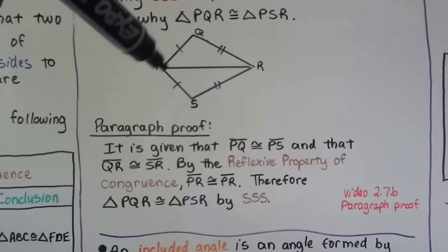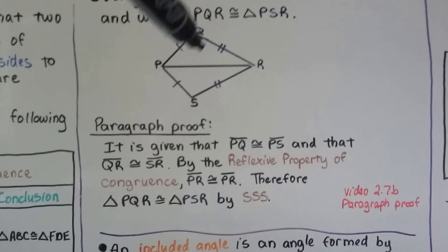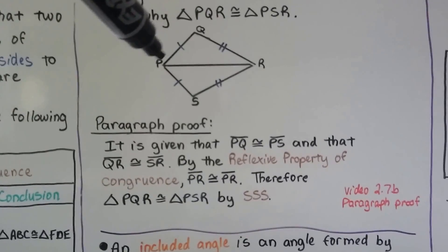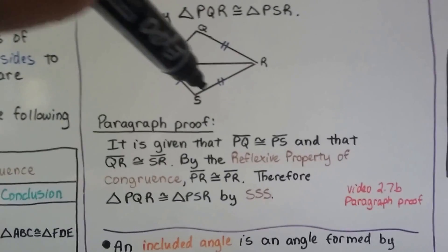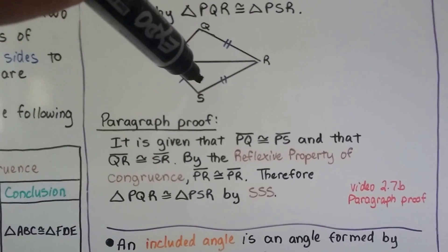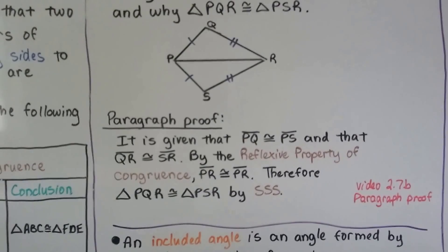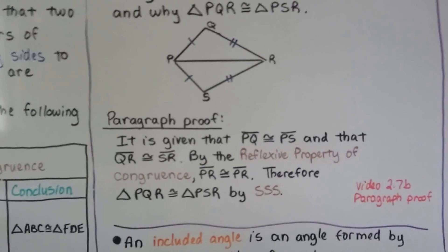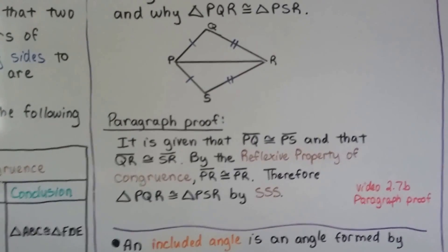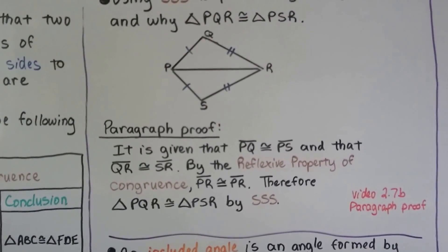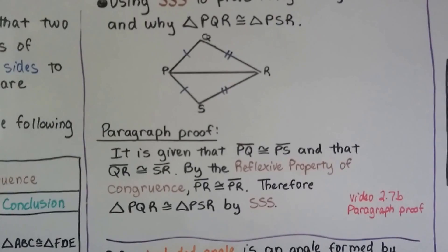What it means is the PR that's used in this triangle is congruent to the PR that's used in this triangle because of the reflexive property. Therefore, triangle PQR is congruent to triangle PSR by SSS.